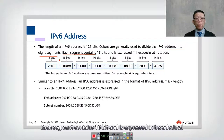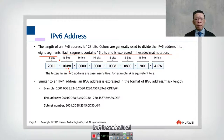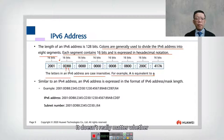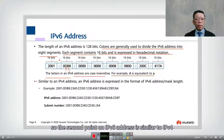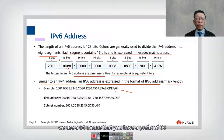Each segment contains 16 bits and is expressed in hexadecimal, so you can see we have 'd' and 'b' — this is not decimal but hexadecimal. The letters in an IPv6 address are case insensitive; it doesn't matter whether it's uppercase or lowercase. The second point is that, similar to IPv4, an IPv6 address is expressed in the format of IPv6 slash prefix length.